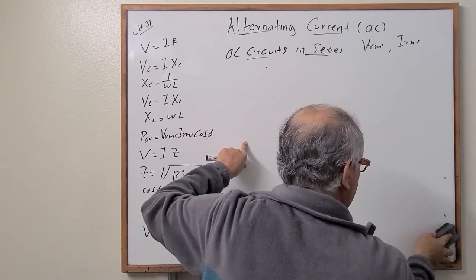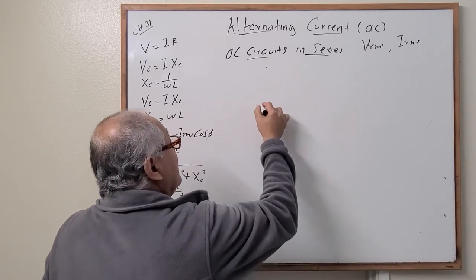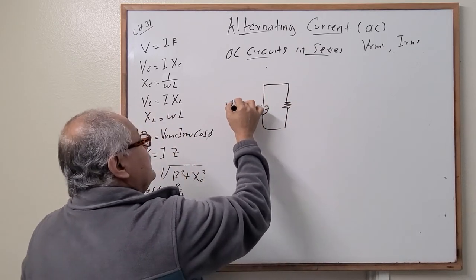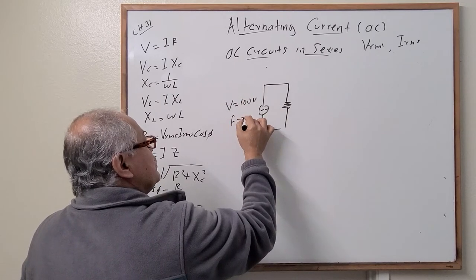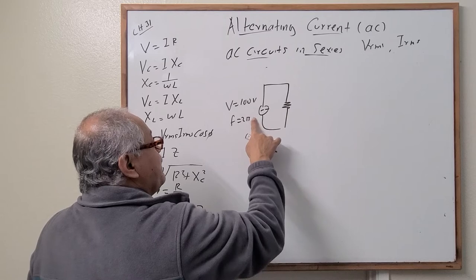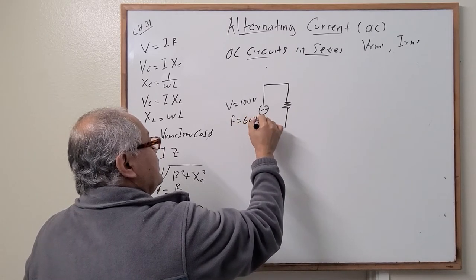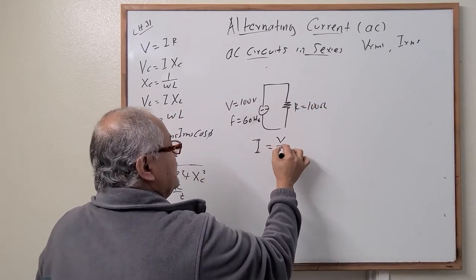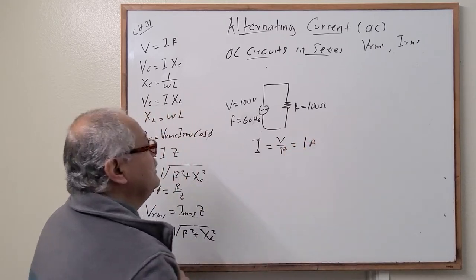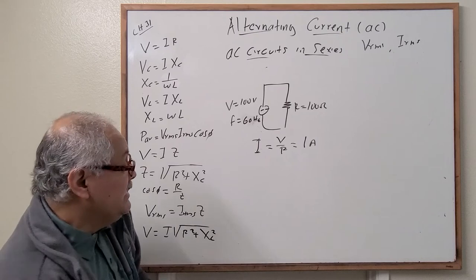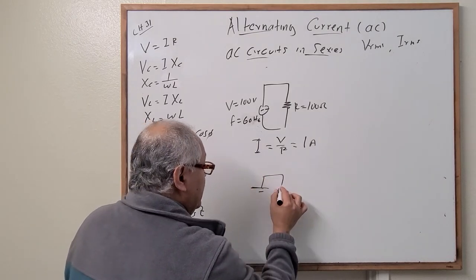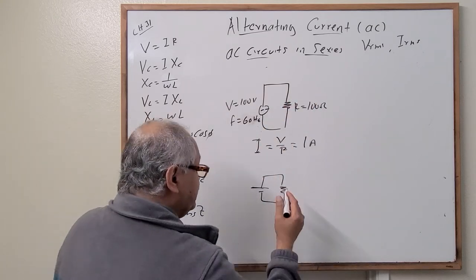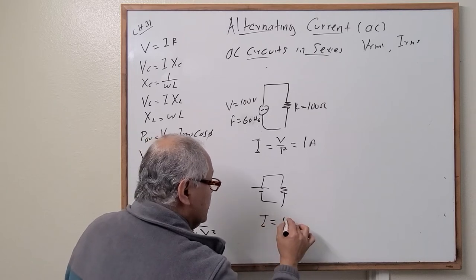Let's do an example for the RL circuit. With the same information — 100 volts, frequency 60 hertz, resistance 100 ohms — using Ohm's law, current equals voltage over resistance equals 1 amp. Using a battery with the same voltage and resistance also gives 1 amp.